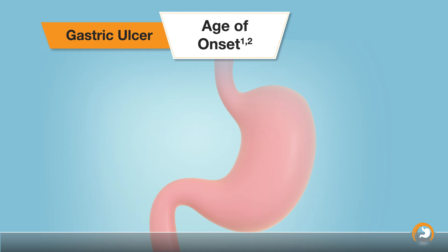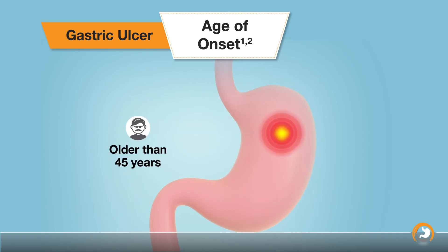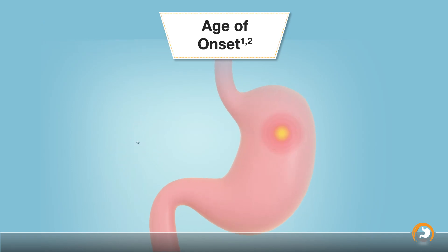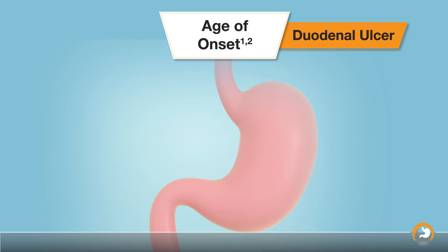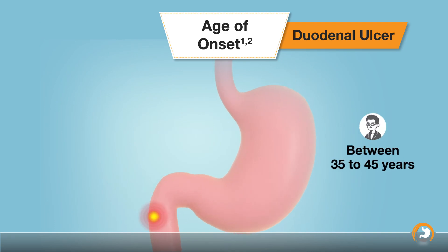Gastric ulcers are commonly seen in patients older than 45 years, whereas duodenal ulcers usually occur at a younger age, between 35 to 45 years.